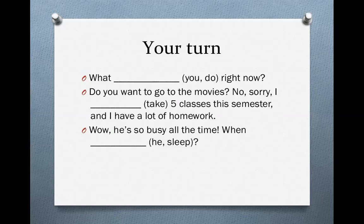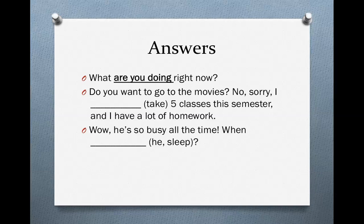Now it's your turn. Read the following sentences and decide if you should use the simple present or the present progressive. Let's look at the answers. First one: What are you doing right now? This tense is the present progressive. Form of the verb be: are; verb -ing: doing. Why did we use the present progressive? Because of the expression 'right now,' so we know we need the present progressive.